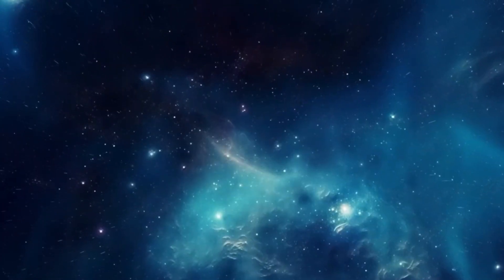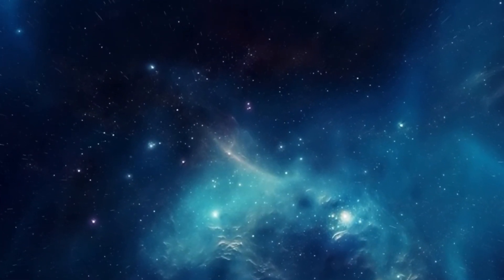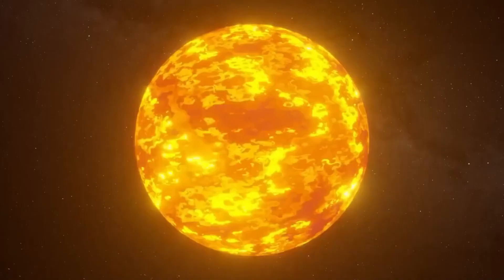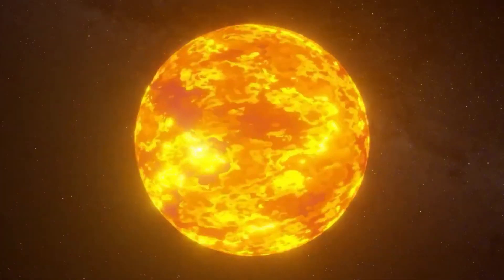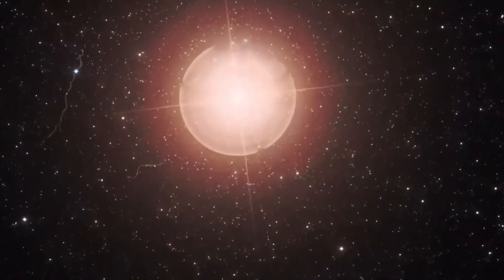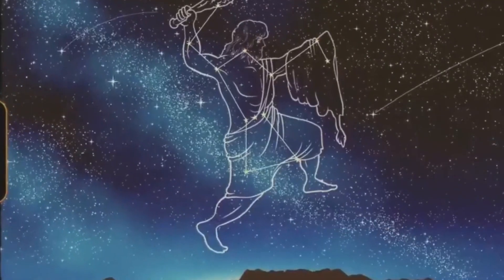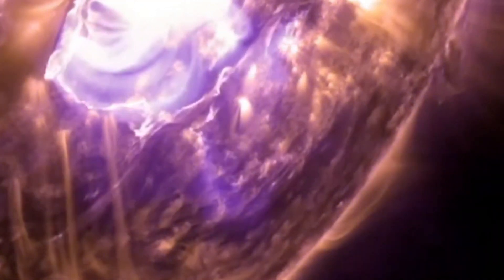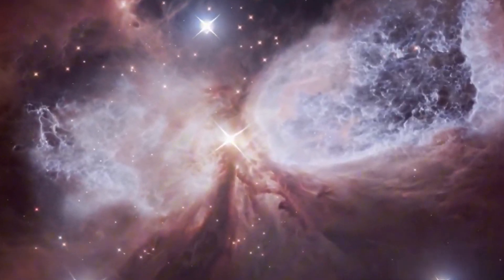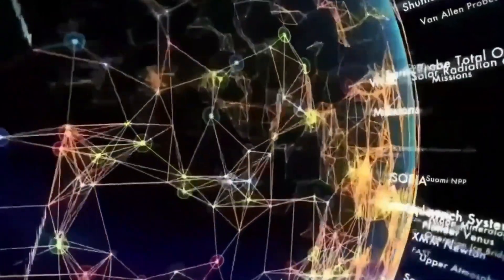However, contemplating the possibility of Betelgeuse going supernova is exhilarating. It would be an extraordinary event, visible even during the day for weeks. When the moment arrives, the initial signs of the supernova's arrival will be subtle yet unmistakable, with neutrinos sweeping over Earth as high-energy photons escape from the expanding cloud of stellar debris. Betelgeuse will gradually grow brighter in the night sky, potentially reaching peak brightness 10,000 to 100,000 times its normal brilliance within just one week. This spectacle will astound anyone fortunate enough to witness it, marking a momentous event in astronomical history.